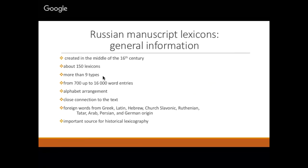The aim of the lexicons was to explain words which were difficult to understand, and most of them are of foreign origin. For example, we can find Greek, Latin, Hebrew, Church Slavonic, Ruthenian, Tatar, Persian, and German words. This makes them very interesting to study, in order to understand what language they came from and how they changed their meaning. That is why these lexicons are an important source for historical lexicography.